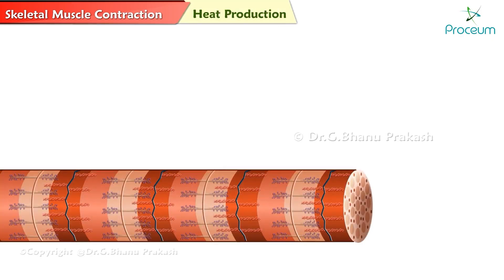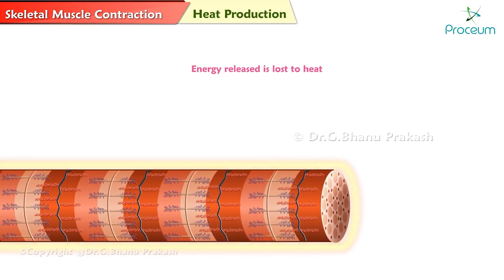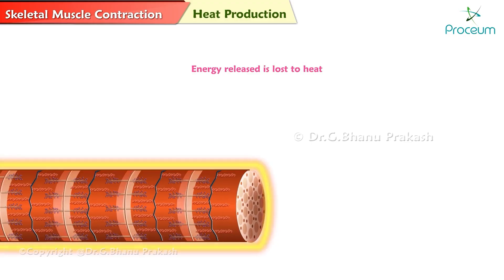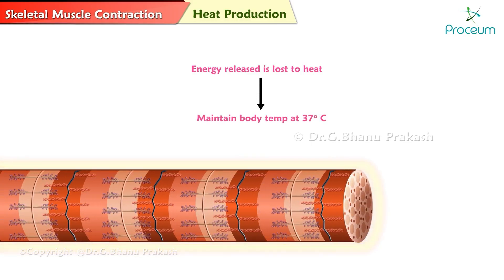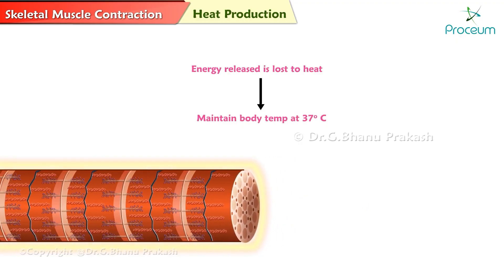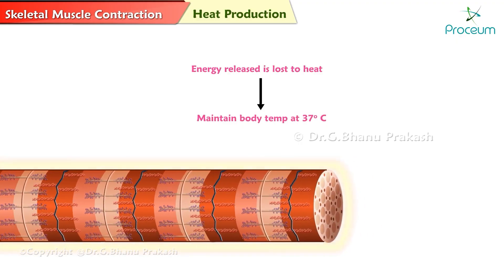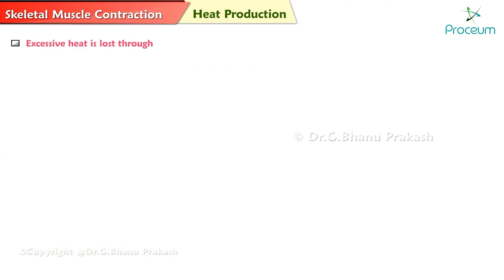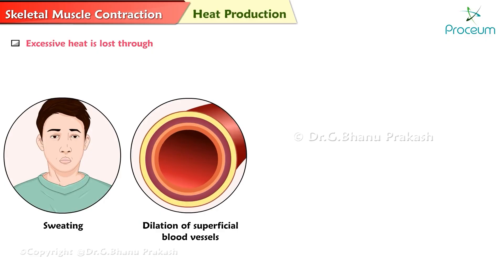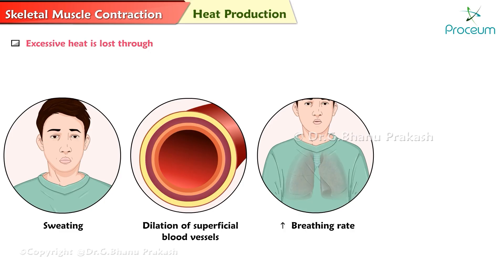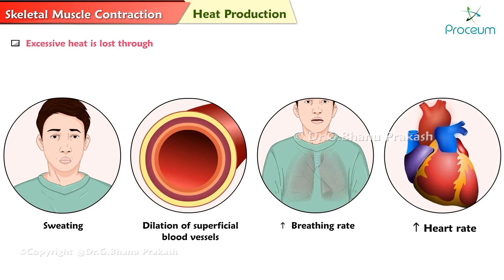Heat production. Almost half of the energy released during muscle contraction is lost to heat, which helps maintain our body temperature at 37 degrees Celsius. Excessive heat is lost through many negative feedback mechanisms including sweating, dilation of superficial blood vessels, increased breathing rate, and increased heart rate.